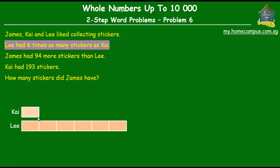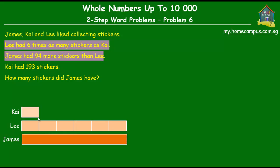Next, James had 94 more stickers than Lee, so we put that in the model. James had as many stickers as Lee plus another 94, and that's given by this little unit over here, which is equal to 94.